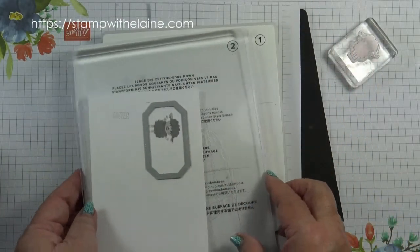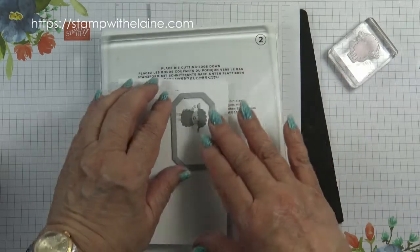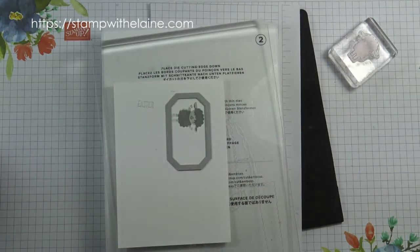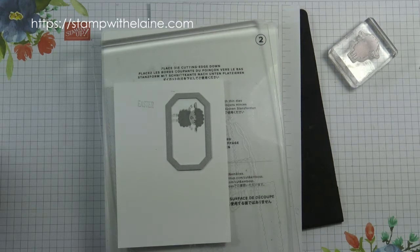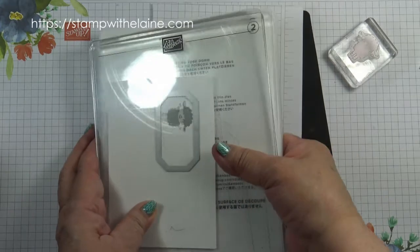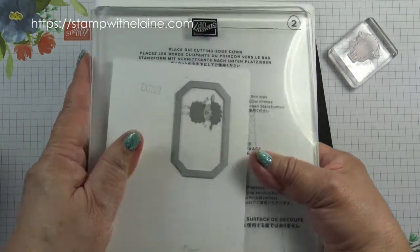Next I'm going to die cut this. Platform one, platform two, one of the platform threes. Cardstock, die, cutting edge face down, and then the second cutting plate, platform three. I'm ready to run it through the machine, so I'll do that off camera.